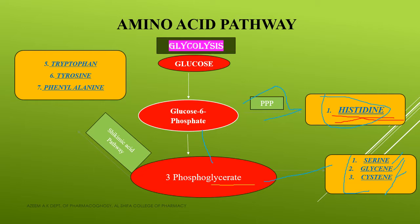From this 3-phosphoglycerate, it also enters into the shikimic acid pathway. From the shikimic acid pathway, three different amino acids are synthesized: phenylalanine, tyrosine, and tryptophan. So altogether, from glycolysis up to this point, we have the biosynthesis of seven different amino acids — histidine, serine, glycine, cysteine, phenylalanine, tyrosine, and tryptophan.